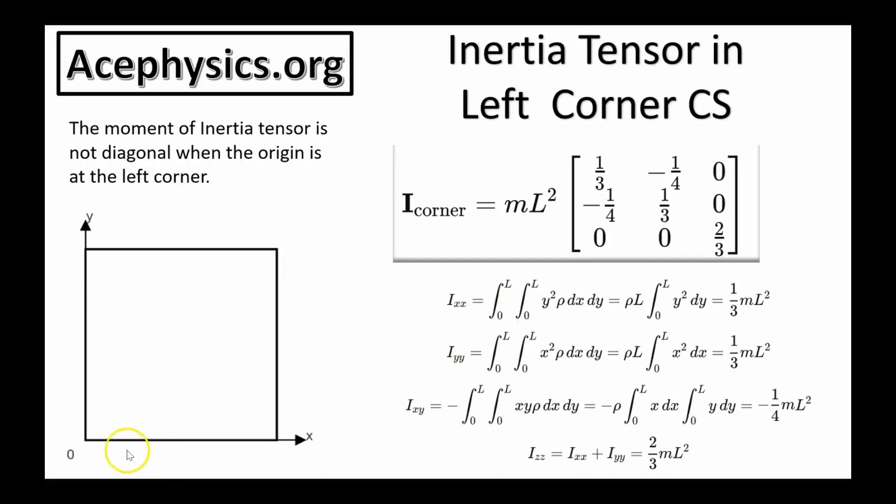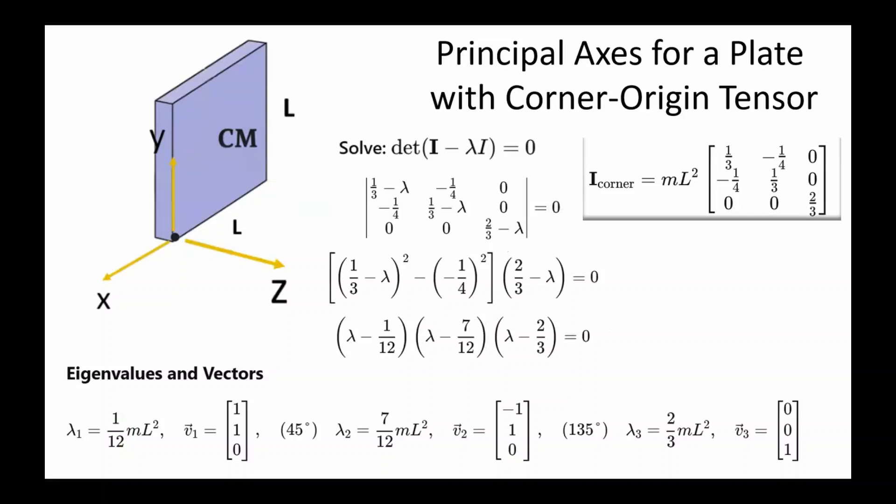Ixx equals the integral as Y goes from zero to L and X goes from zero to L of Y squared dm where dm is mass density dx dy and you get one third ml squared. That's where the one third comes from. As you can tell this moment of inertia tensor is different than the tensor where we use the coordinate center at the center of mass. The inertia tensor here is not diagonal which tells us the object is not symmetrically aligned with the coordinate axes.